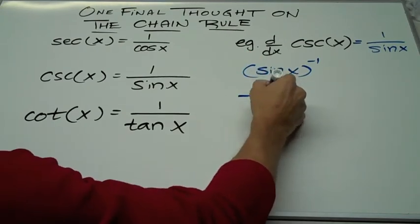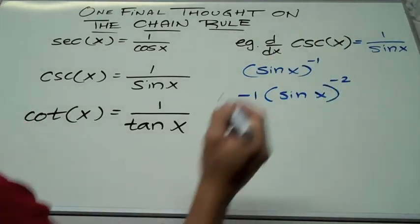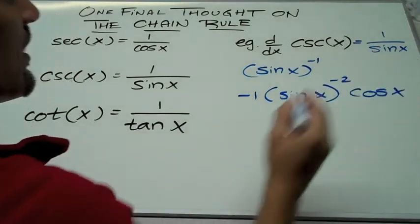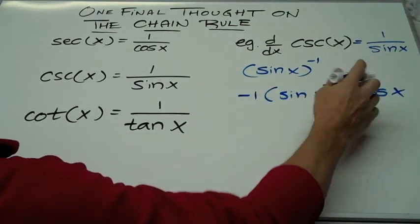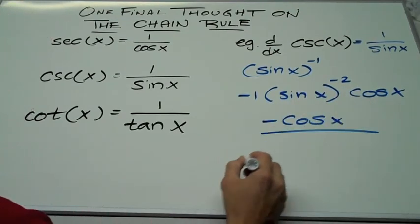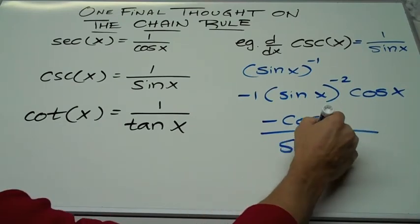Let's find the derivative of that. Well, that would be negative 1 times sine x to the negative 2. Chain rule says now we have to take the derivative of sine x, which is cosine x. So, we really have negative 1 times cosine x, negative cosine x divided by sine x squared, which we could write like that.